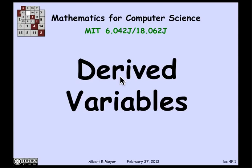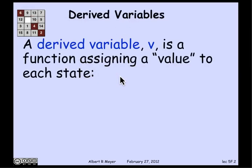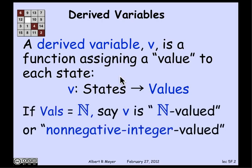The technique of derived variables comes up in analyzing state machines. A derived variable is simply a function on the states of a state machine that assigns some value to the states. If the values happen to be the non-negative integers, it's called a non-negative integer valued variable, but it could be real valued, complex valued, or even take on other kinds of unusual values — not necessarily numerical.